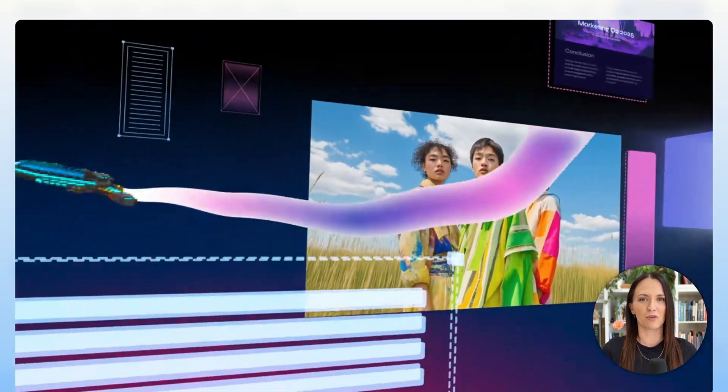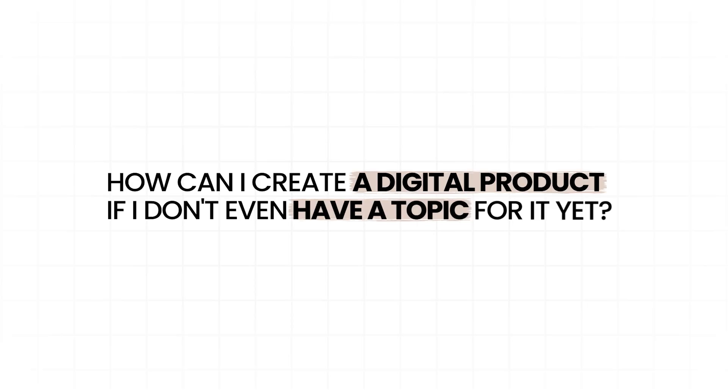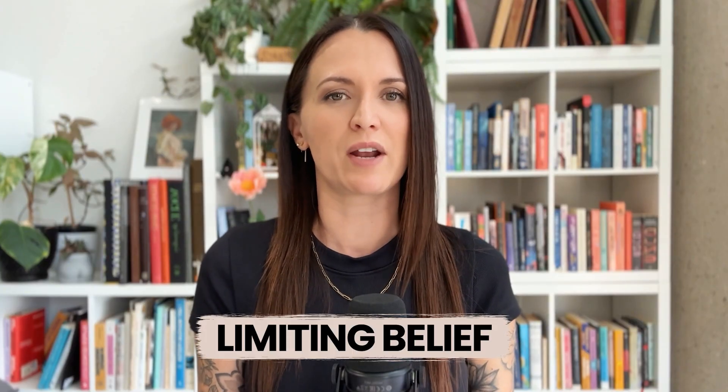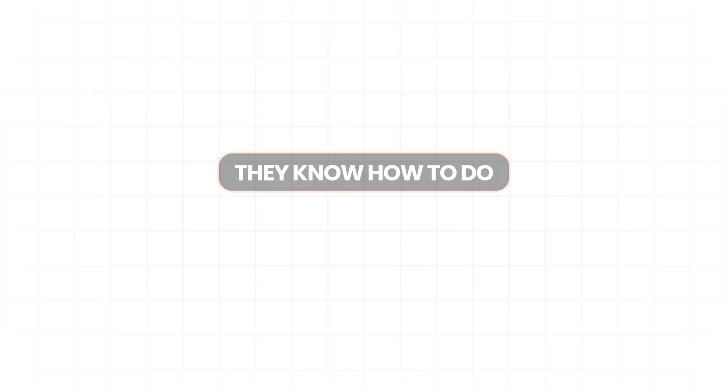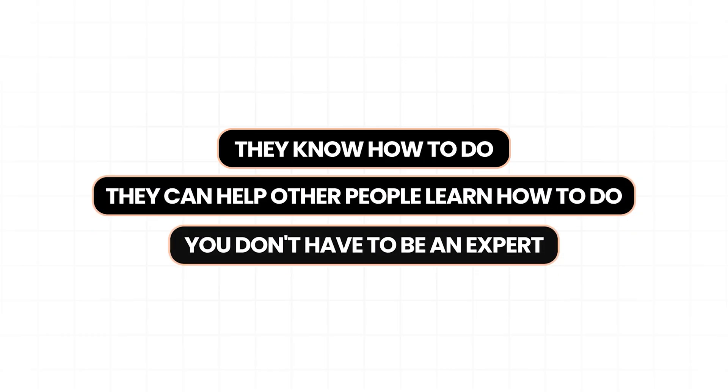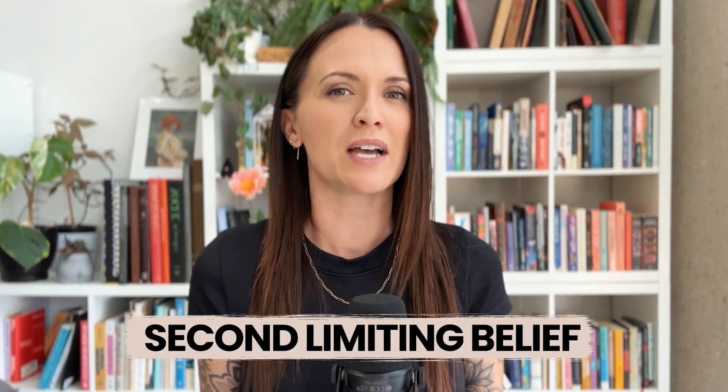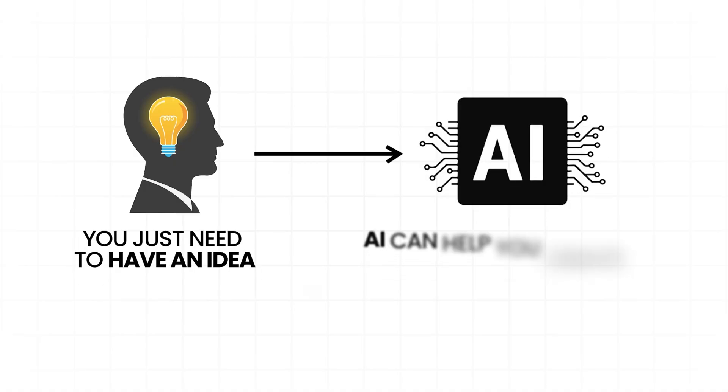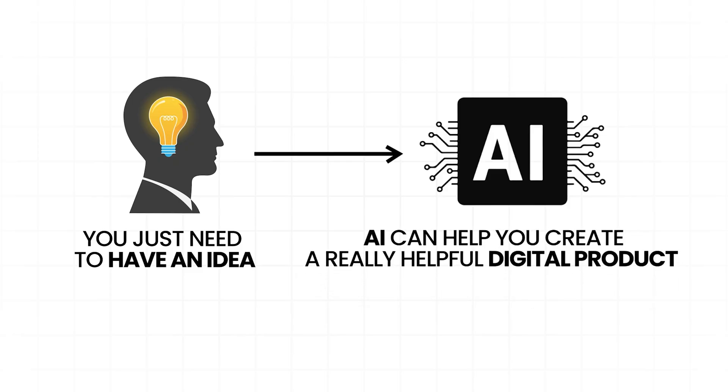Before I show you how to use Gamma to create your first digital product, you're probably saying: how can I create a digital product if I don't even have a topic for it yet? You're right, you can't. But don't let this limiting belief stop you, because everyone has something they know how to do that they can help other people learn. You also don't have to be an expert. Thinking you have to be an expert is the second limiting belief that stops people before they even start. You just have to be a couple of steps ahead of other people. And if you're still not sure what to create your digital product about, I'll show you how you can use AI to help you create it anyway. You just need to have an idea that you know something about, and AI can help you create a really helpful digital product around that idea.